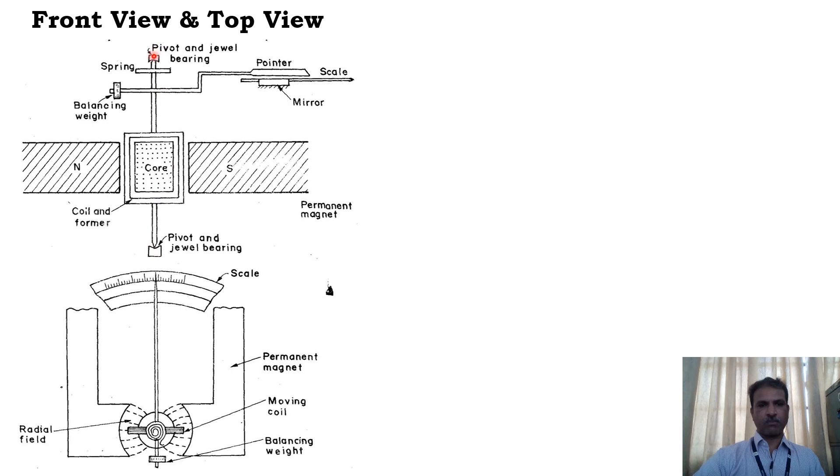This is mounted on the spindle and that is suspended on pivot and jewel bearings on both top and bottom. We have the pointer, we have the scale, we have the mirror, and we have the balance weights. We have a spring on both ends. When we see the top view...